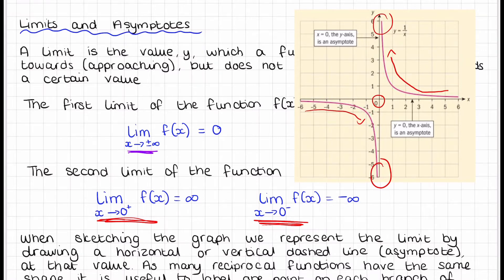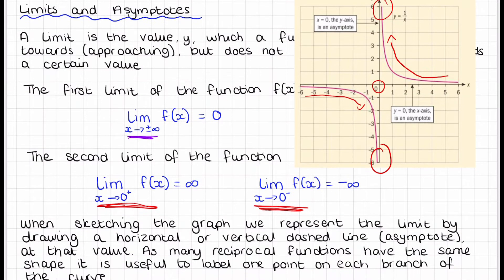When sketching the graph with a limit, we represent the limit by drawing a horizontal or vertical dashed line asymptote. Many reciprocal functions have the same shape and it is useful to label one point on the branch of the curve.